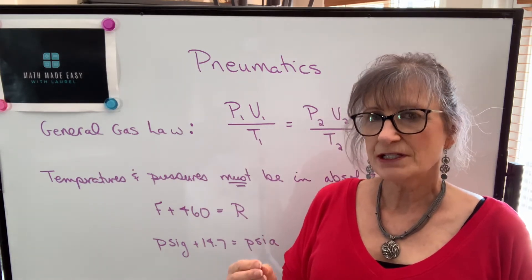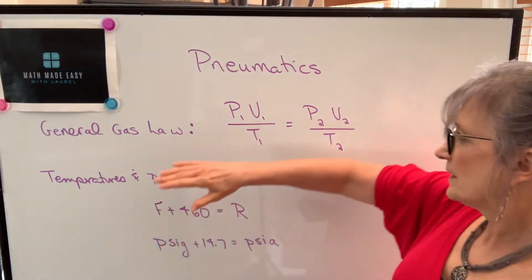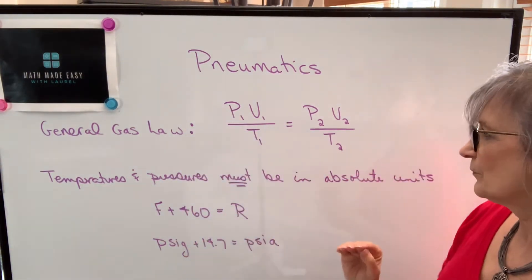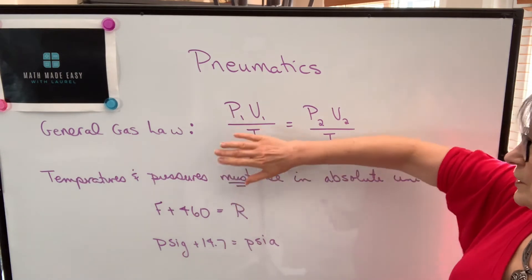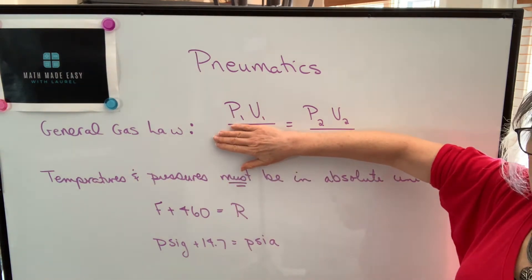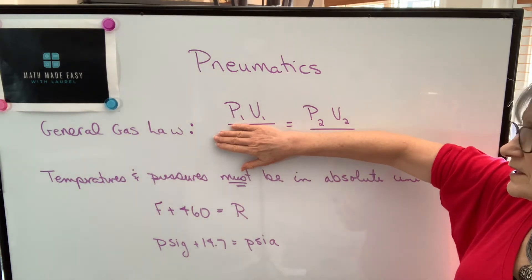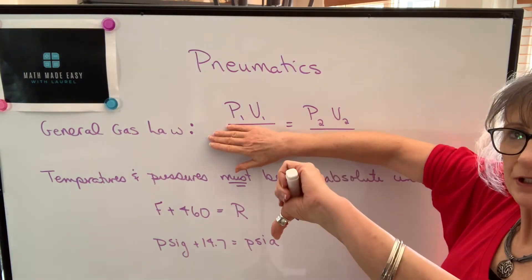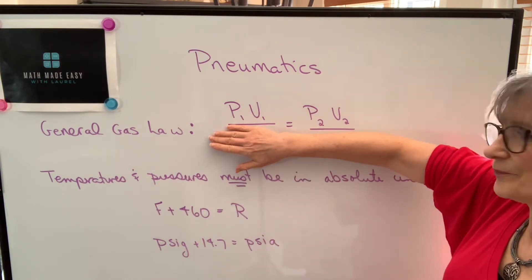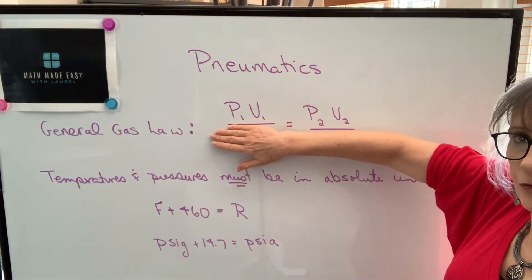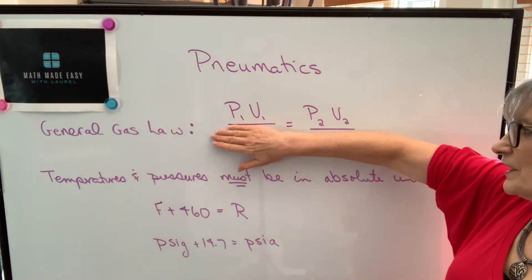We can break down this general gas law into individual laws. For example, if you have a situation where the temperature of the gas is not changing, then we have what's called Boyle's Law, which is an inverse proportion. As the volume decreases, the pressure will increase. So if you compress air so the volume decreases, the pressure will increase.